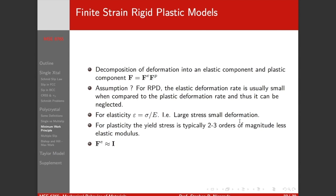Let's consider a finite strain deformation model which we're going to hang all this Taylor stuff on, and we're just going to assume that it's rigid-plastic for the moment. So we have our deformation gradient F that's applied. We can decompose this into an elastic part and a plastic part. There are arguments about an additive versus multiplicative decomposition, but for large strains we can consider a plastic permanent deformation and then an elastic stretch followed by that.